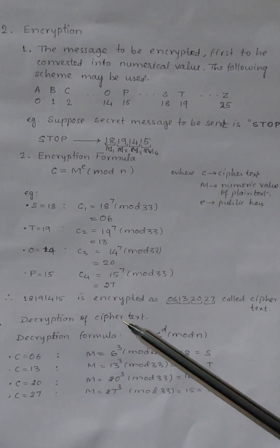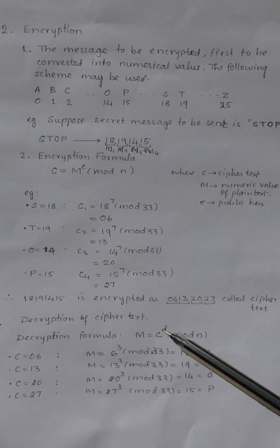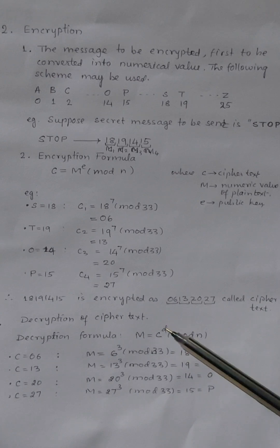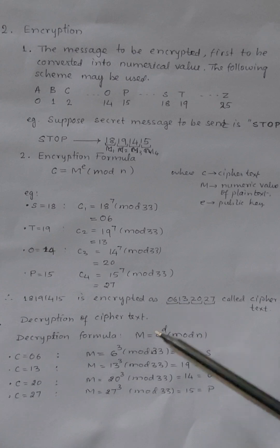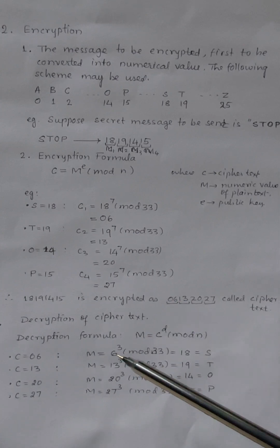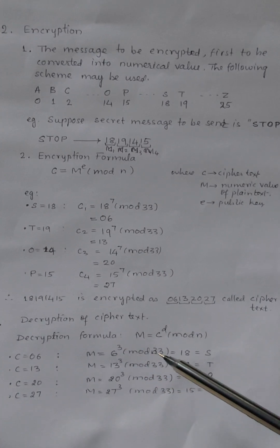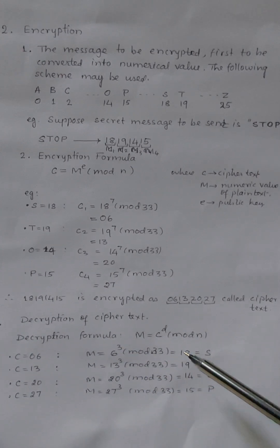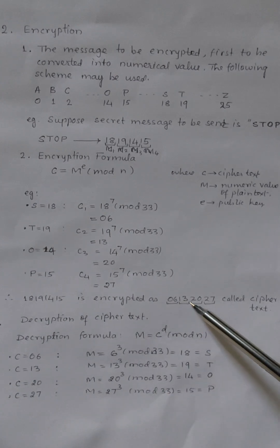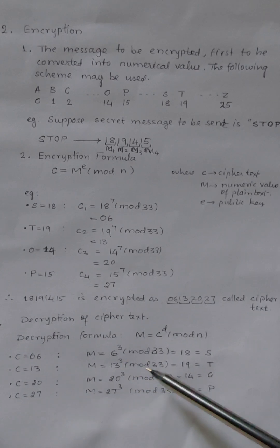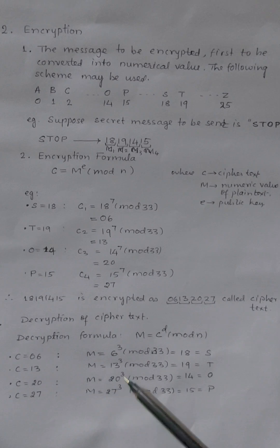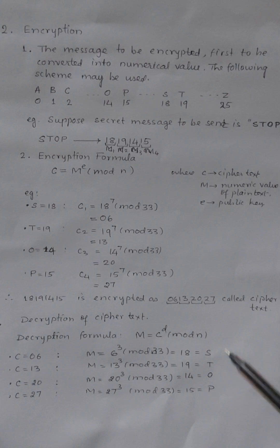The last step is decryption of the ciphertext using the private key D = 3. The formula for decryption is M = C^D mod N. For ciphertext 06: 6^3 mod 33 = 18, which is S. For 13: 13^3 mod 33 = 19, which is T. Similarly, 20 and 27 will be converted to O and P. So the receiver will receive the same plain text: STOP.